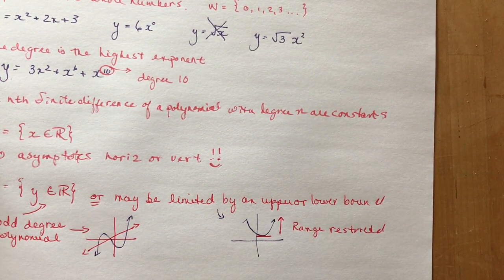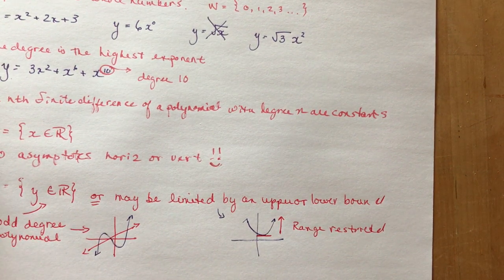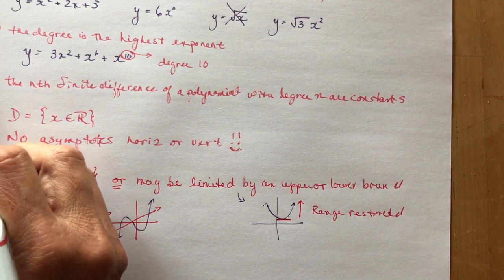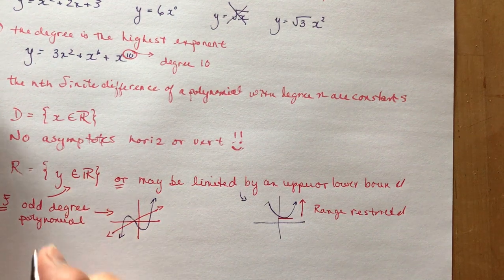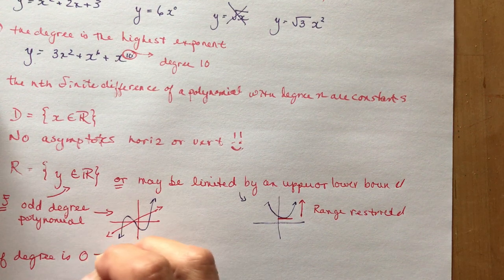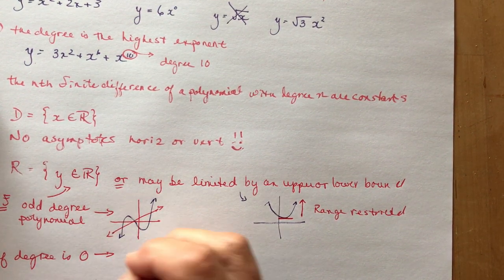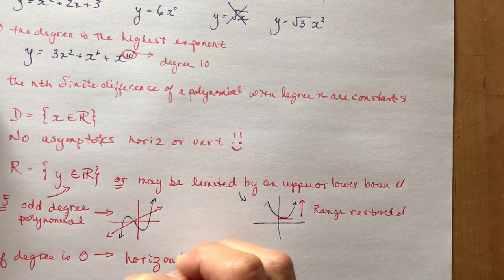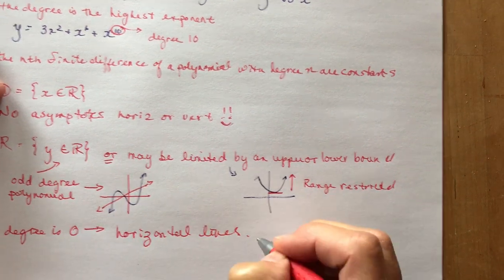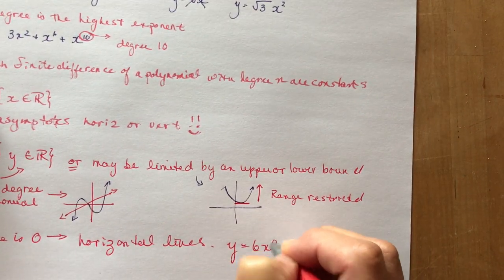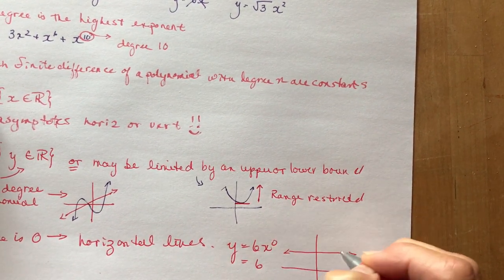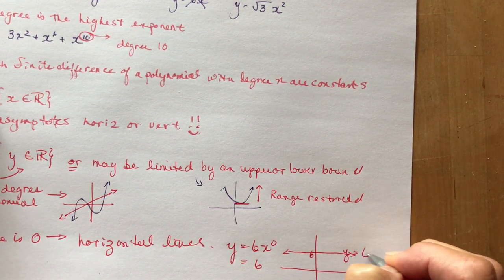And finally, if the degree is zero, what do you have? If the degree is zero, then you have a horizontal line. In other words, that example I gave up above. I said y equals six x to the zero. Well, that's just y equals six. And y equals six looks like this. Going through six. Y equals six.